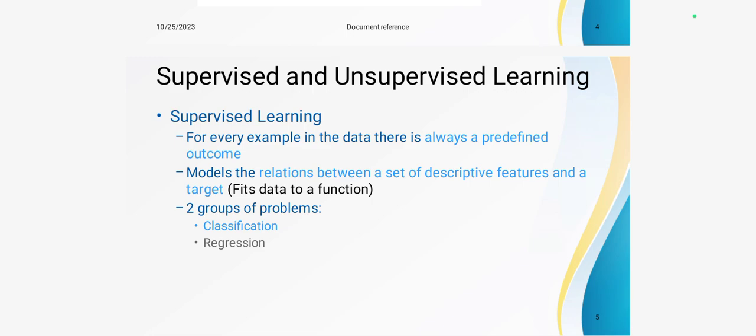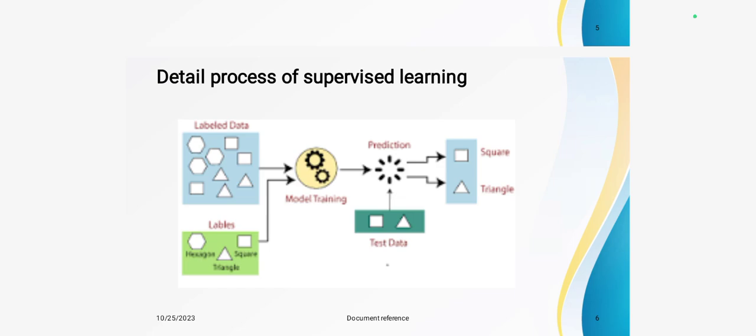The detailed process of supervised machine learning: first, we collect a labeled input dataset. Next is model training, where the model is trained using a well-labeled dataset. Then comes prediction, which is essentially testing — some input data is provided and the model produces a labeled output, which is used to classify the data.